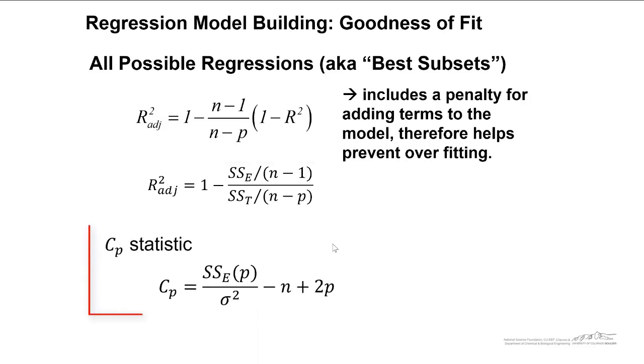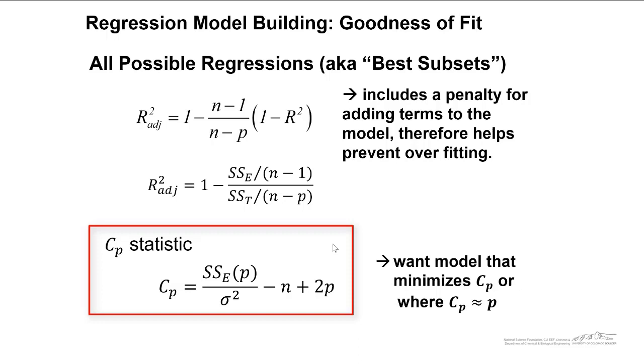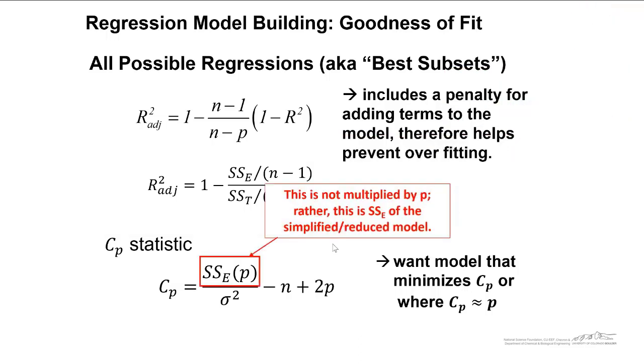We can also look at this CP statistic, also known as Mallow's CP. We want a model that minimizes CP, or where CP is approximately equal to the number of parameters in your model. This is the simplified model. So this is really important that the SSE here, it's not multiplied by P. Rather, this is SSE of the simplified and reduced model, so your P-parameter model. And on the bottom here, this is also important, this is the standard error squared of the full term model. So you want to maximize r squared adjusted, and you want to minimize CP.